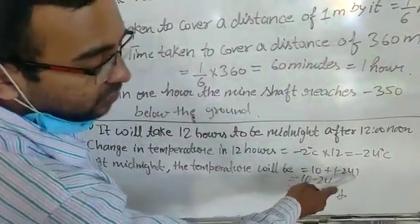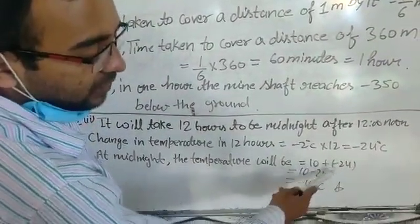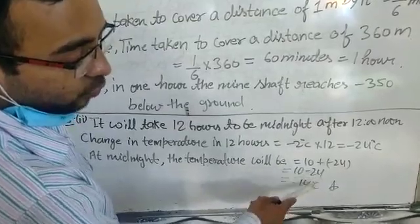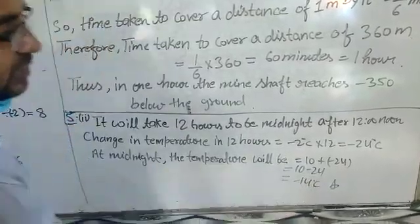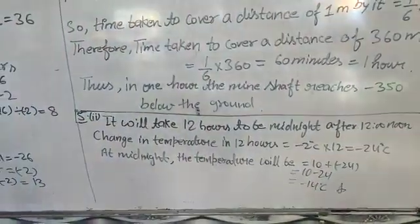So 10 plus minus 24 equals 10 minus 24, which equals minus 14 degrees Celsius.